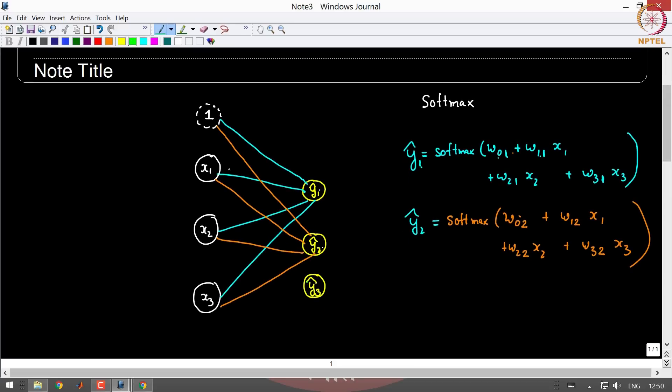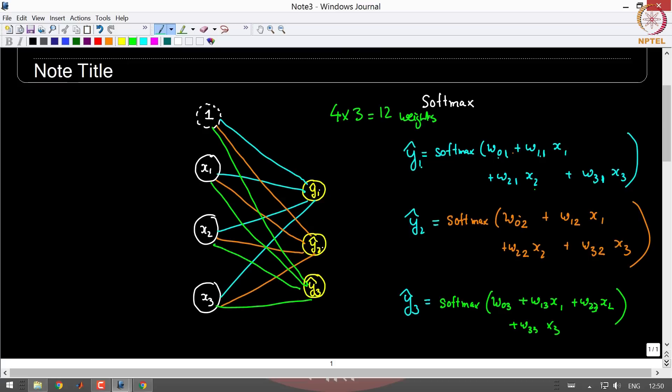Finally, if we come here, I need another set of weights. So Y hat three would be softmax of W03, W13 X1, W23 X2, plus W33 X3. So how many weights do we have? Four unique weights in each one of these. So you have four into three, twelve weights in order to account for the bias term also.